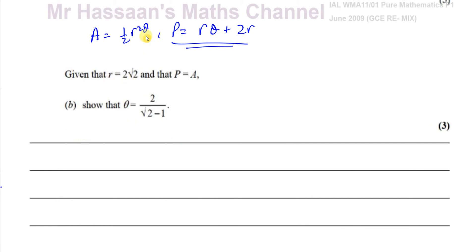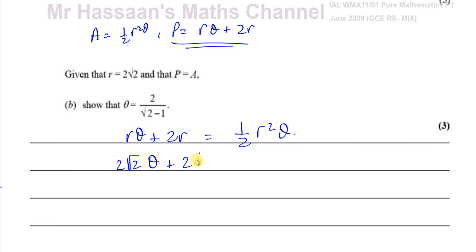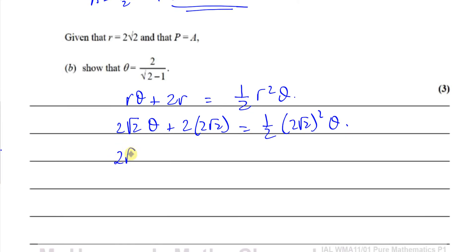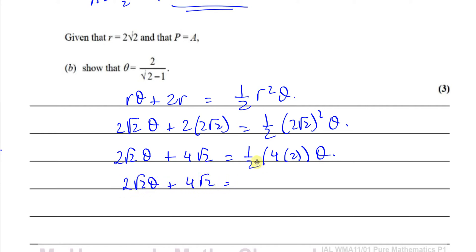Given that r equals 2√2 and p equals A, I replace the r's with 2√2 and equate the two expressions. So: rθ + 2r = ½r²θ becomes 2√2·θ + 2·(2√2) = ½·(2√2)²·θ. Simplifying: 2√2·θ + 4√2 equals ½ times (4 times 2)·θ, which gives 2√2·θ + 4√2 equals 4θ.